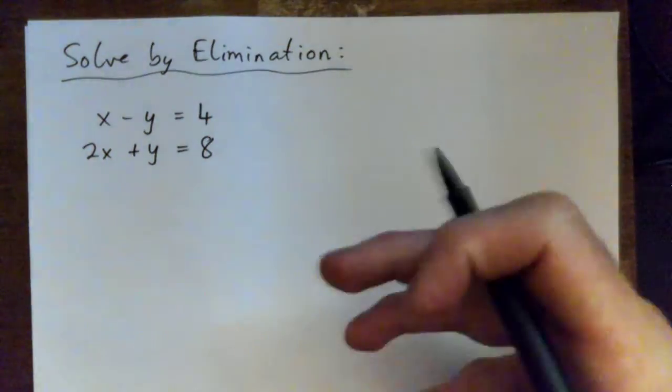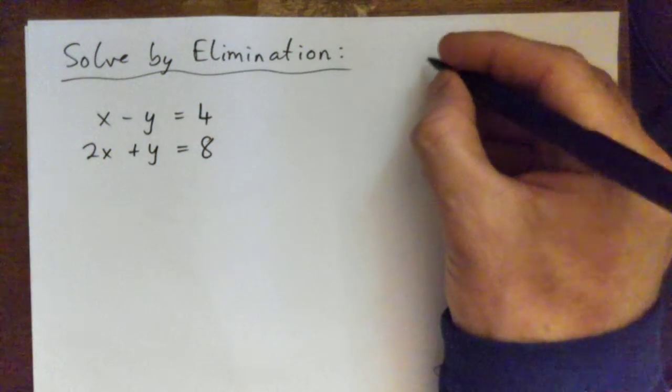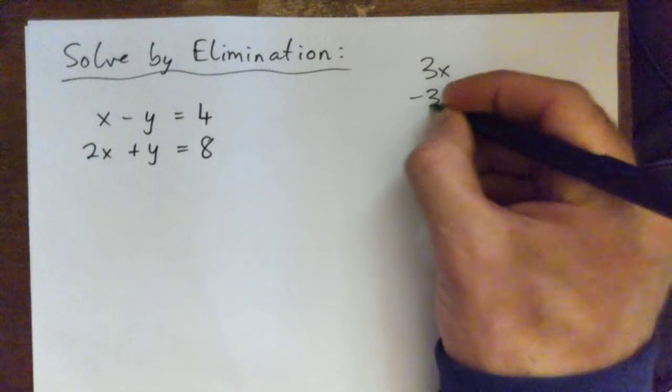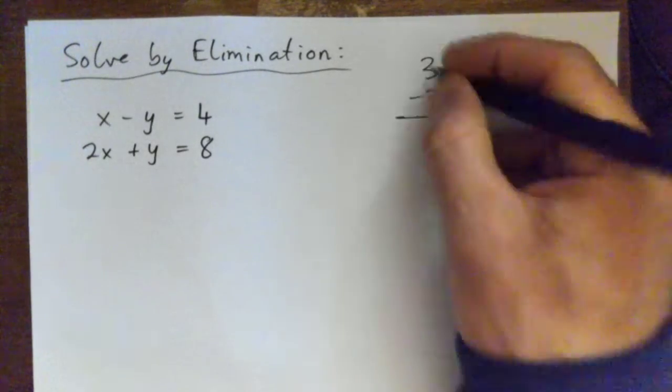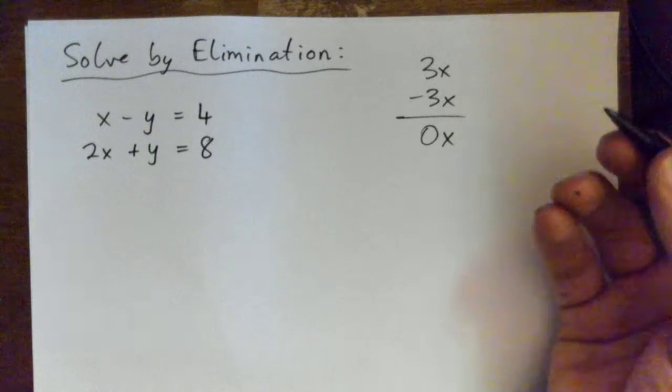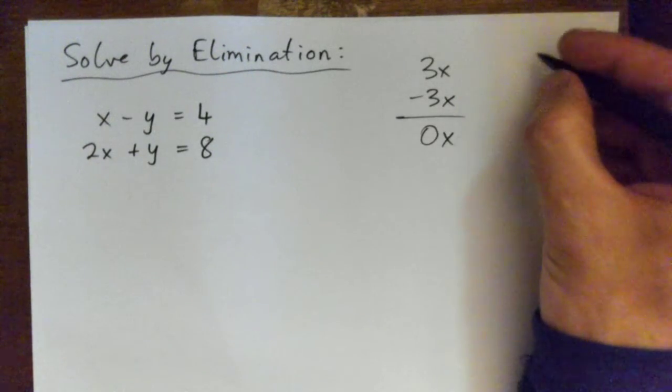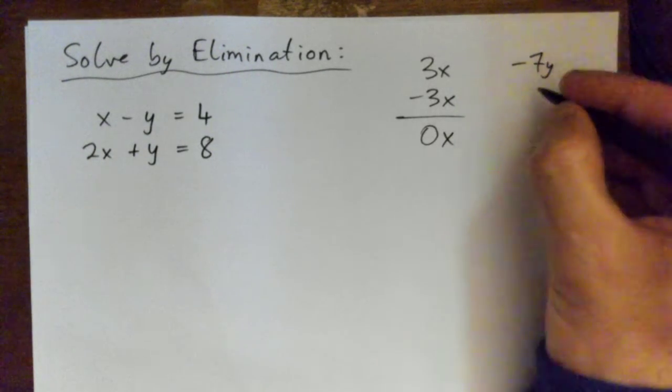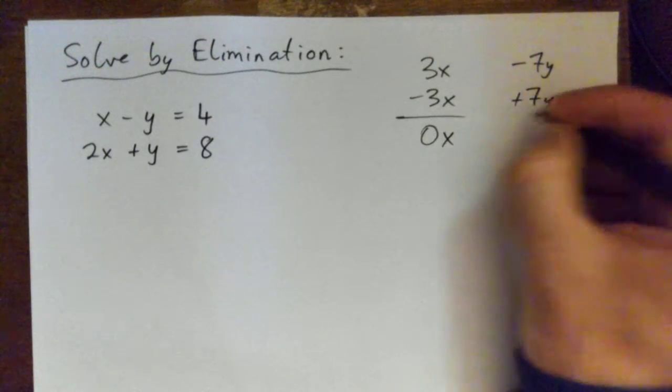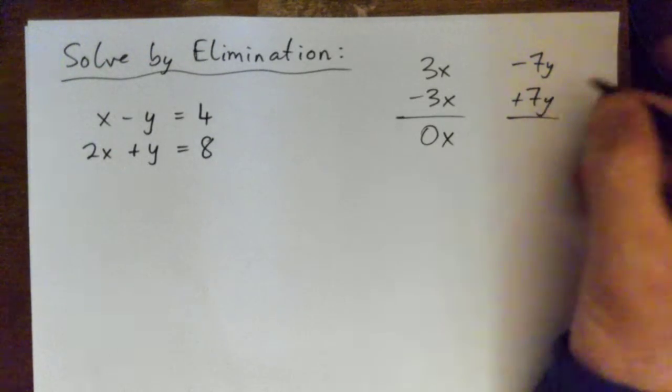So for example, if you had like a 3x and a negative 3x and you added those together, you would get 0x or just 0, and the x's would go away. Or if you had a negative 7y and a plus 7y, you add the equations together and you get 0y or just 0. So we want that type of situation to occur.